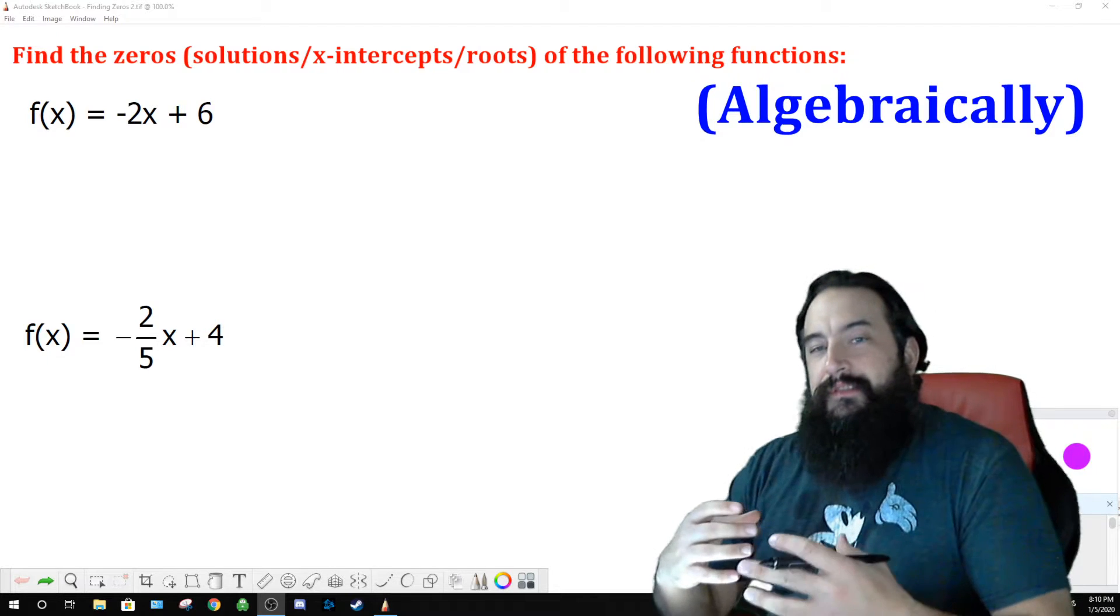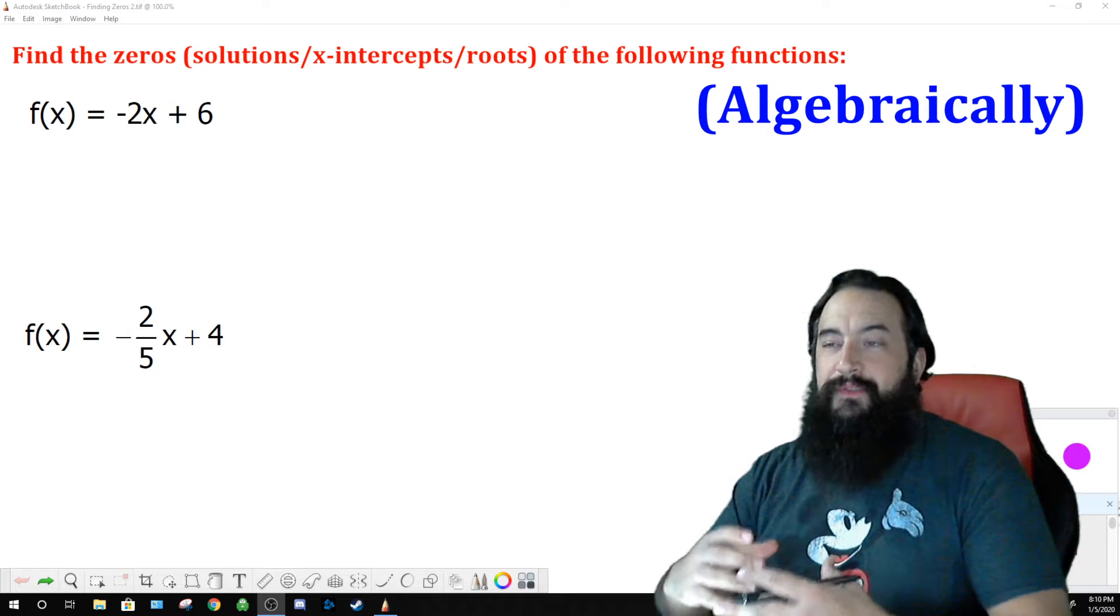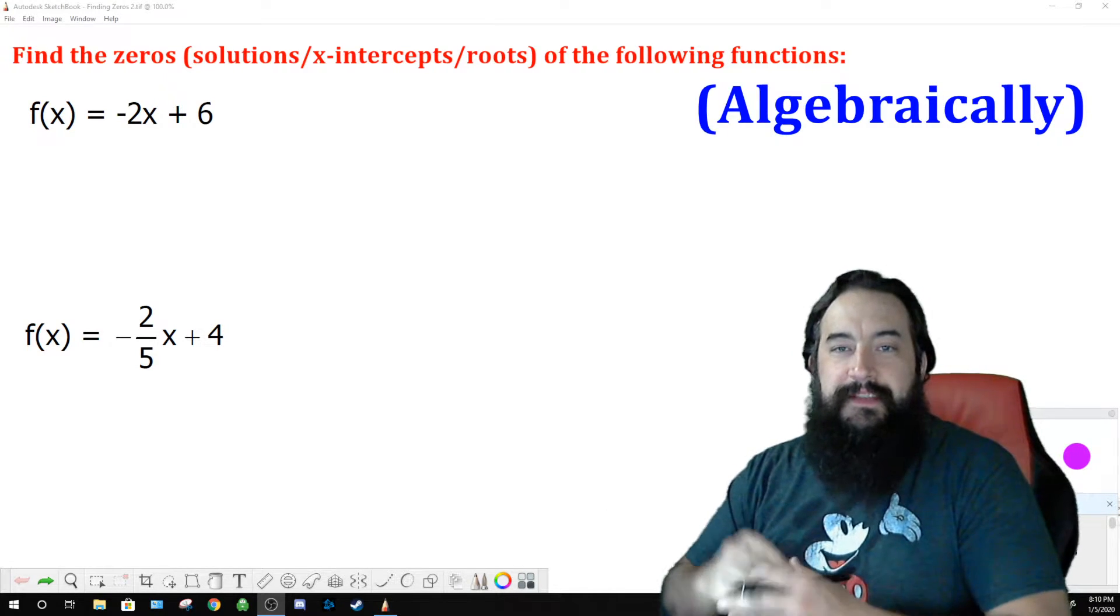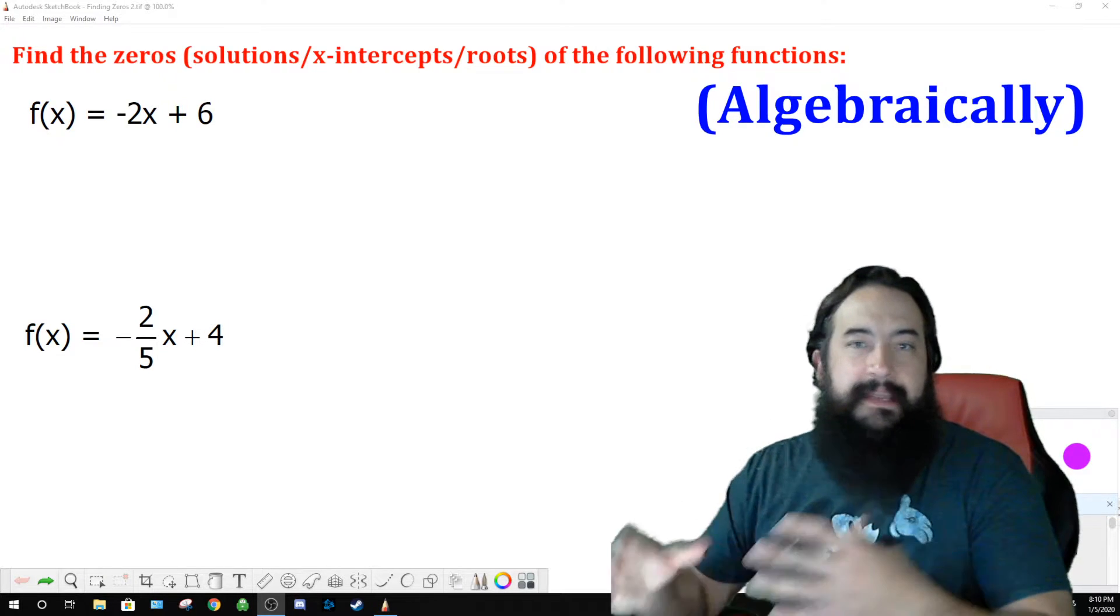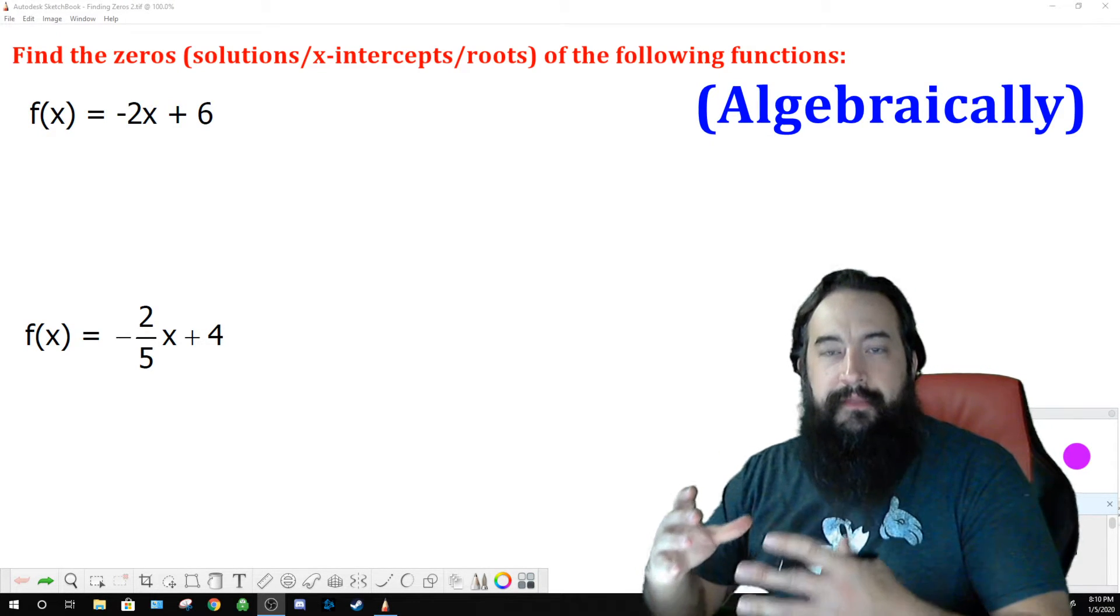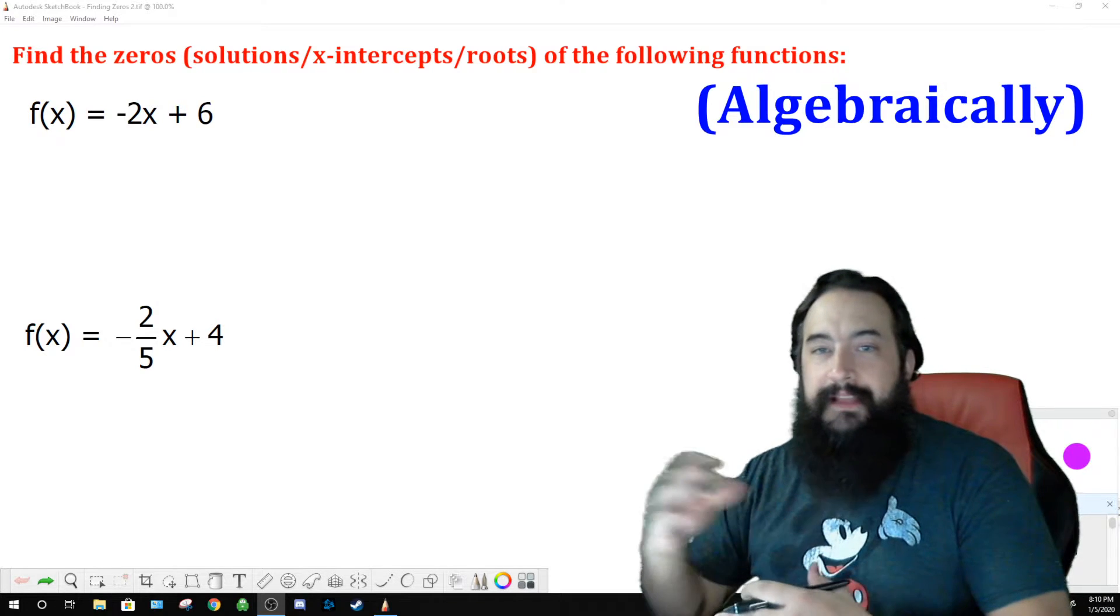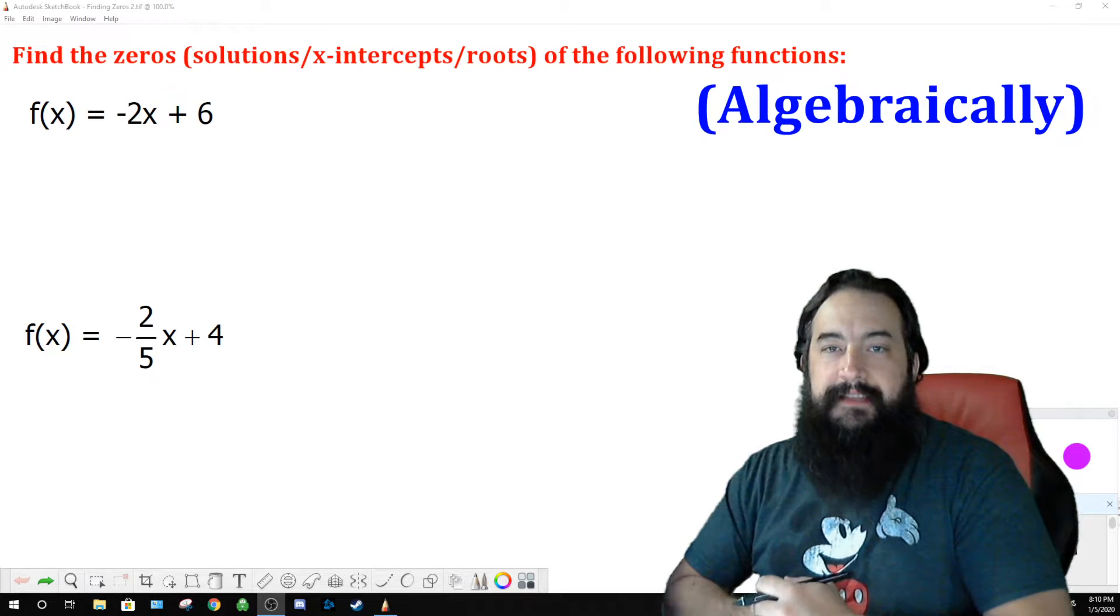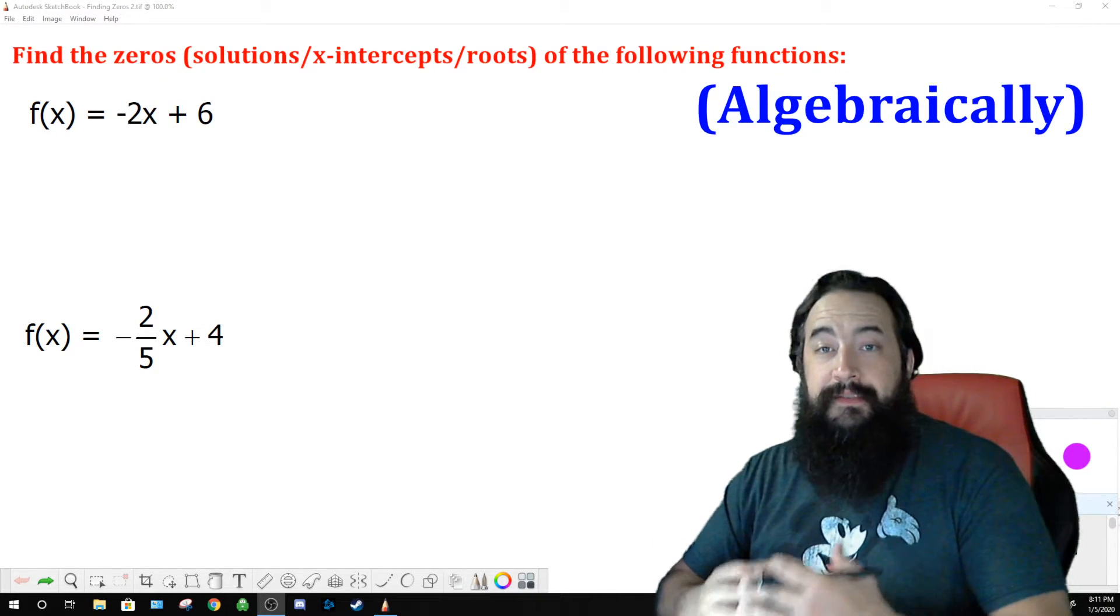Finding zeros, we talked about in the last video, zeros have other names. They're also called solutions or x-intercepts or roots, so if you see any of those vocabulary terms and you're asked to find one of those things, it's all the same thing. You're finding the x value where the function value is zero. On a graph, that's where the picture of the graph crosses the x-axis. Algebraically, it's when the function's output value is equal to zero.